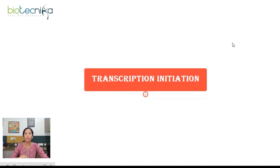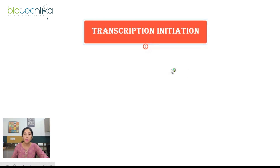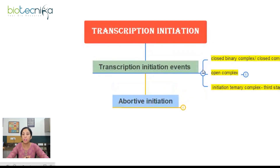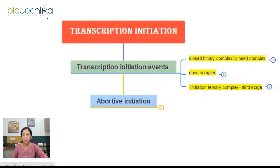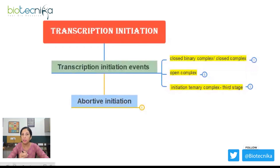Let's get started, but before we learn the details of this mechanism, we must be able to recall the initiation steps — the steps which occur during the initiation of transcription in a prokaryotic cell. We can divide these initiation events into three stages: first, the formation of closed binary complex; second, formation of open complex; and third, formation of initiation ternary complex.